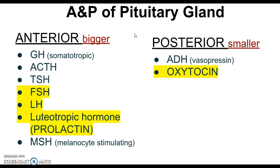To review: the pituitary gland in the brain releases many hormones and is called the master gland — like a manager, it tells other parts of the body what to do. Problems are either too much or too little. With hyperpituitarism and too much growth hormone, we get gigantism in a child or acromegaly in an adult. With hypopituitarism and insufficient growth hormone, we get dwarfism in a child, or simply hypopituitarism in an adult since they can't shrink after reaching adult height. Treatment is either shutting it down if overreacting or replacing what's missing.